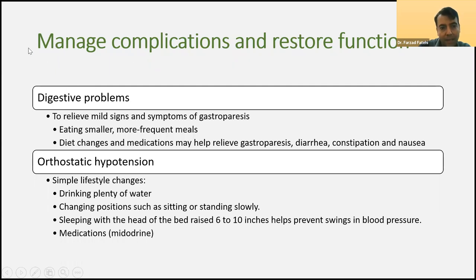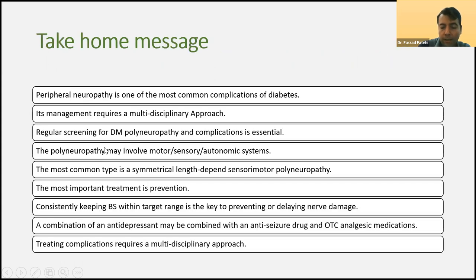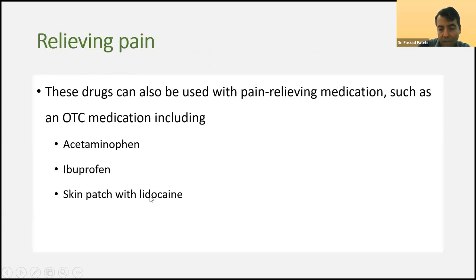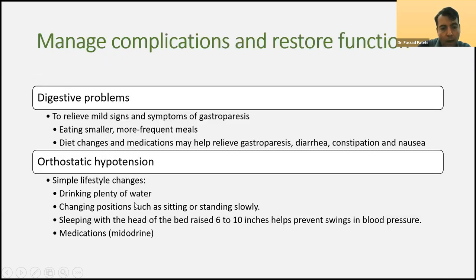It's not only pain that bothers patients — we have autonomic symptoms such as digestive problems. For digestive problems, we should advise the patient to eat smaller, more frequent meals and change diet to include more fiber. For orthostatic hypotension, we advise drinking plenty of water, changing positions slowly — sitting or standing very slowly — and sleeping with the head of the bed raised around 6 to 10 inches to prevent blood pressure swings at night. If autonomic instability is very severe, we may use medications such as midodrine.